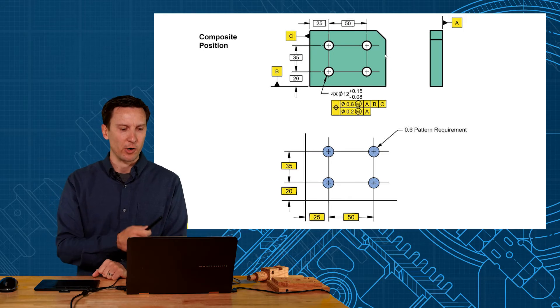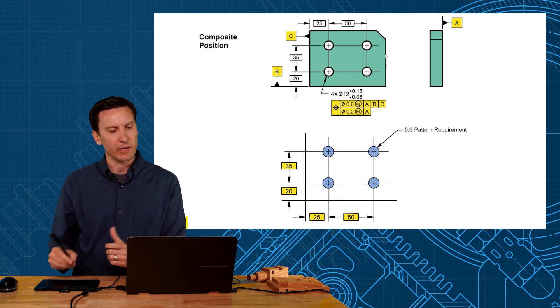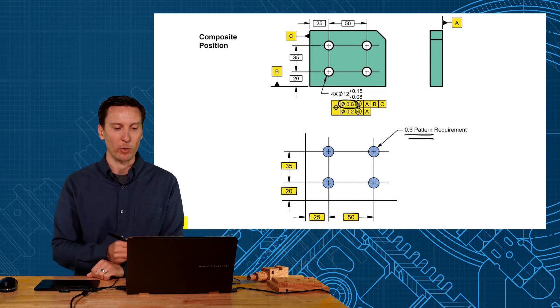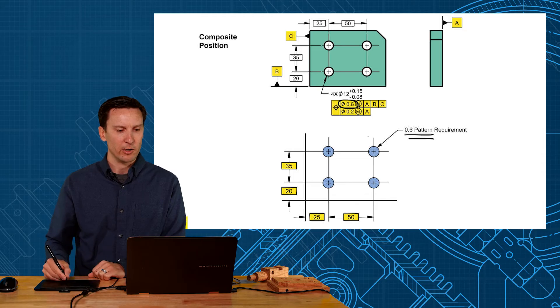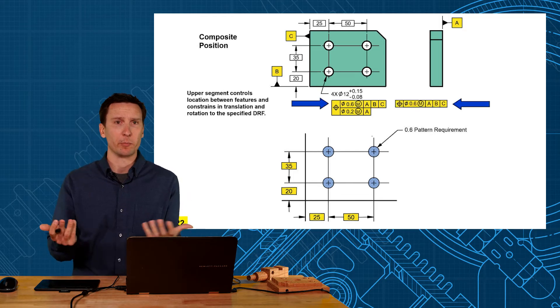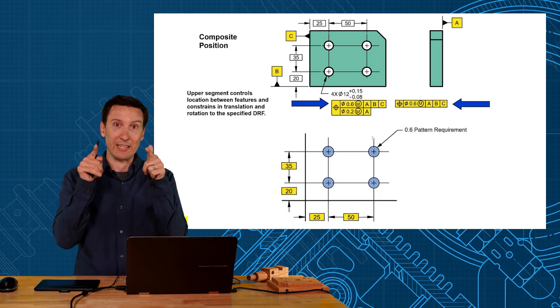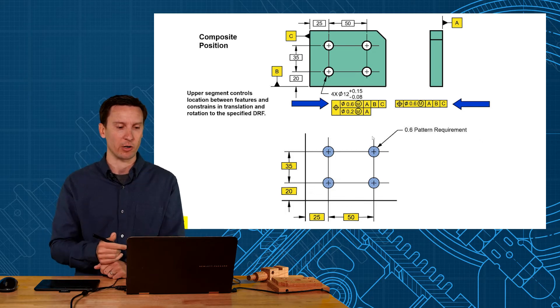Let me show some animations for how this is working. Now I had to make these tolerance zones really big. This is not the hole that you're seeing—this is the greatly exaggerated 0.6 tolerance zone. And notice on the top position there that reads just like a normal position requirement.